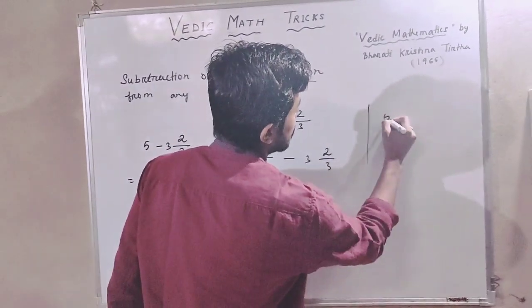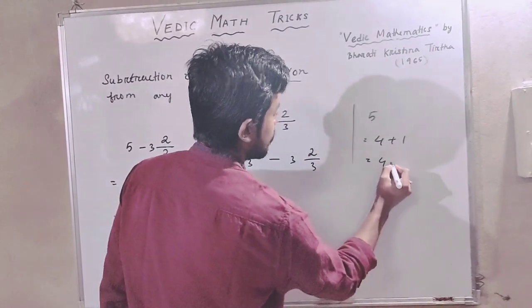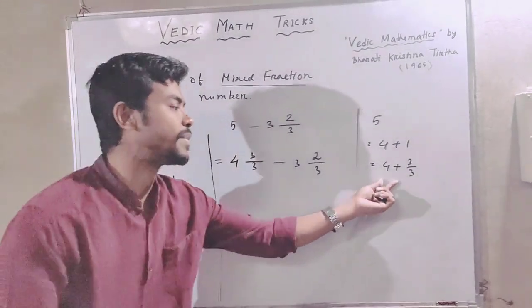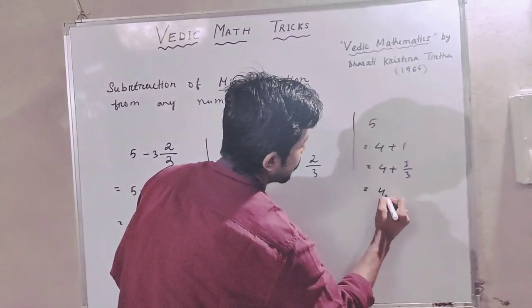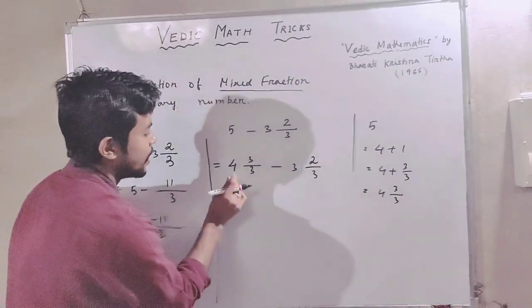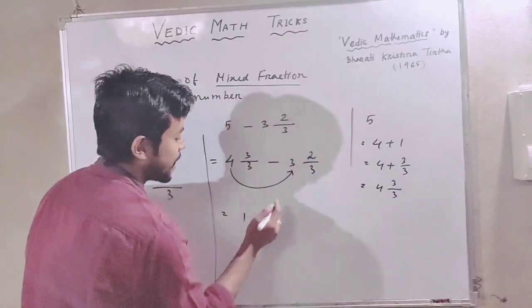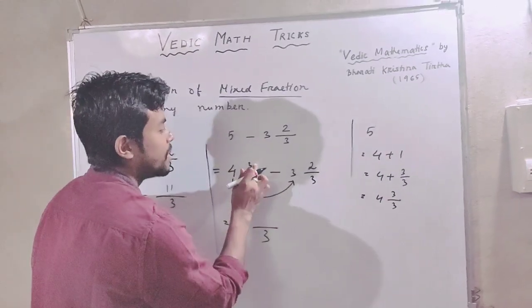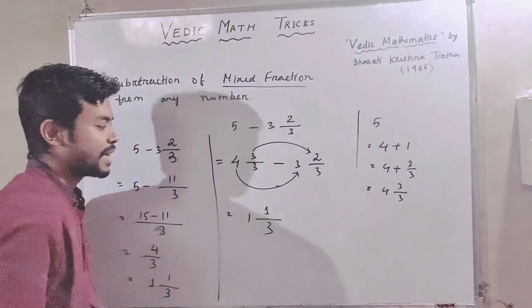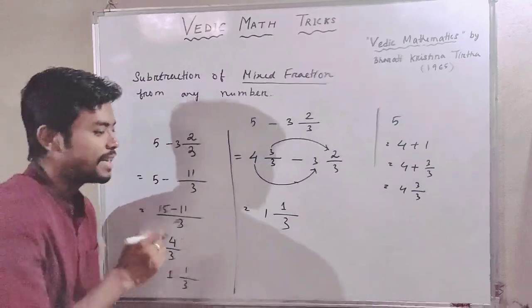We can negate 5 and 2, which gives 4 plus 1. So 4 plus 3 by 3. We can negate 4 and 3 by 3. Then 4 minus 3 equals 1. Same result — we can negate.